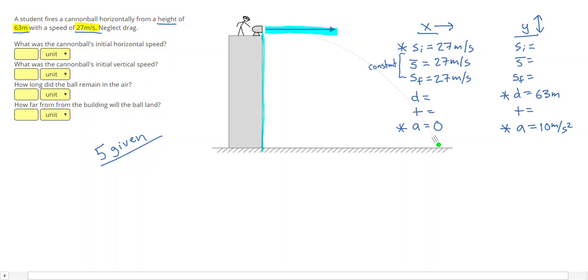So there is one last given, and that comes from the fact that when the ball was launched, the ball was launched horizontally to the right, but it was not moving up or down, so the initial vertical speed is going to be zero. So now we have our five given, and we can start solving the problem.